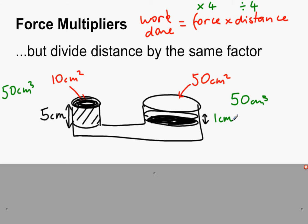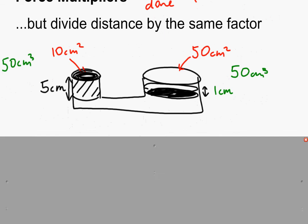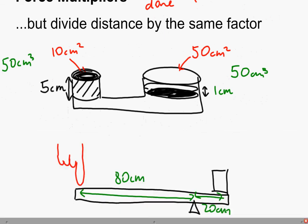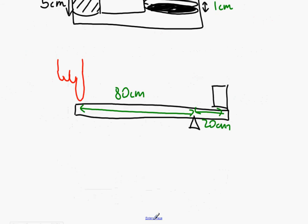Well, if the area is 50 centimeters squared, then it's only moved up by one centimeter. So even though this multiplies our force by a factor of five, it divides the distance it moves by a factor of five. So it only moves a fifth as far. So that's the trade-off. You get more force, but the distance is less. So you have to move your input through a much greater distance than the output moves, which conserves energy. The same applies to the lever.